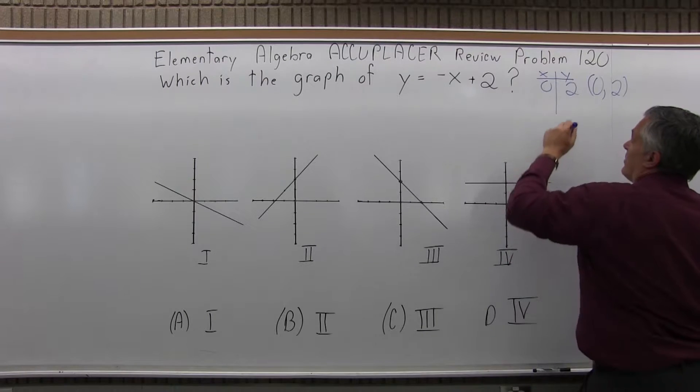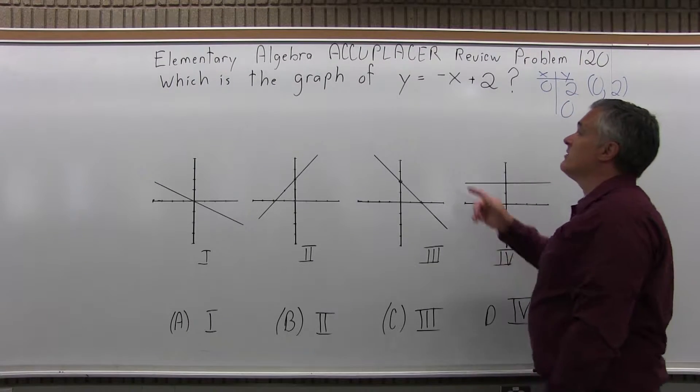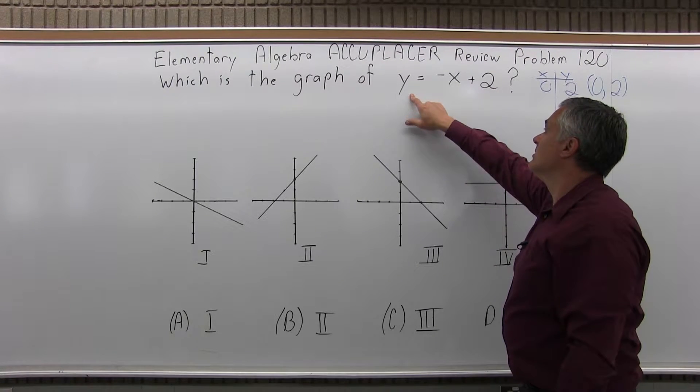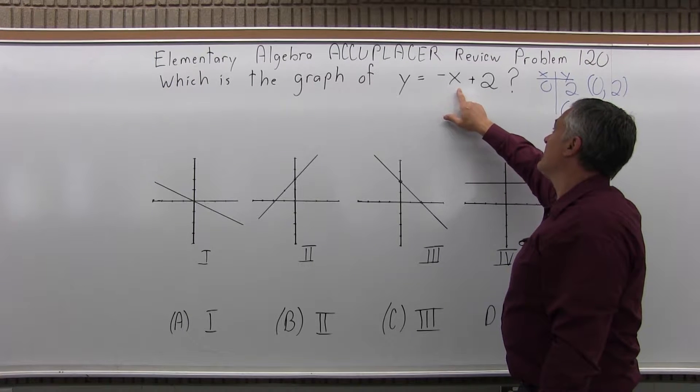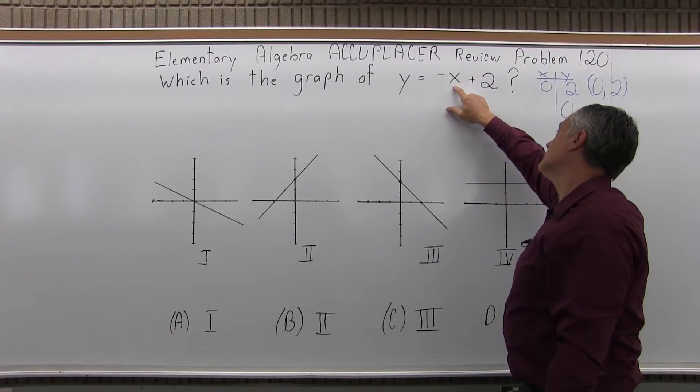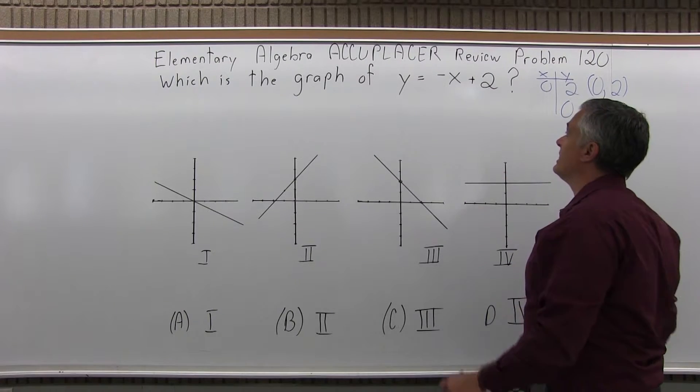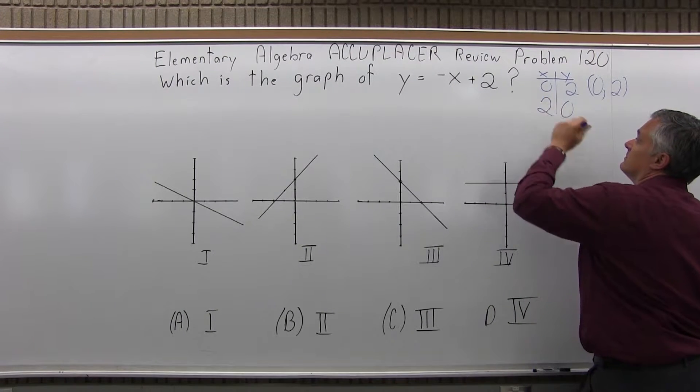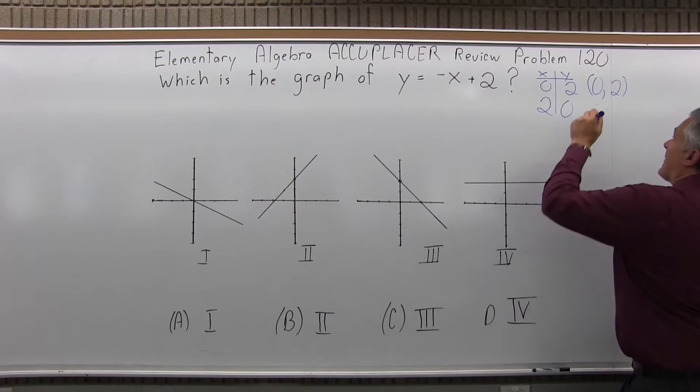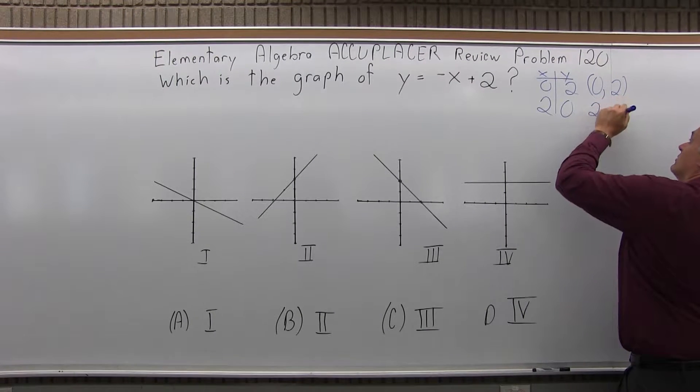And to pick up a second point, let's put in 0 for y. So if y is 0, I have negative x plus 2. Well, x would be also 2. So I'd have minus 2 plus 2 would make 0 equals 0. So (0,2), (2,0).